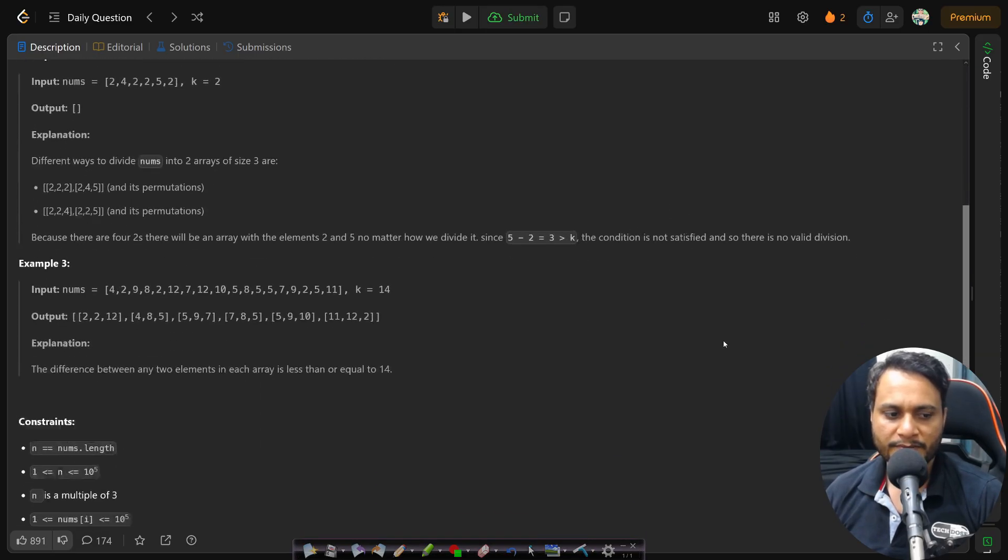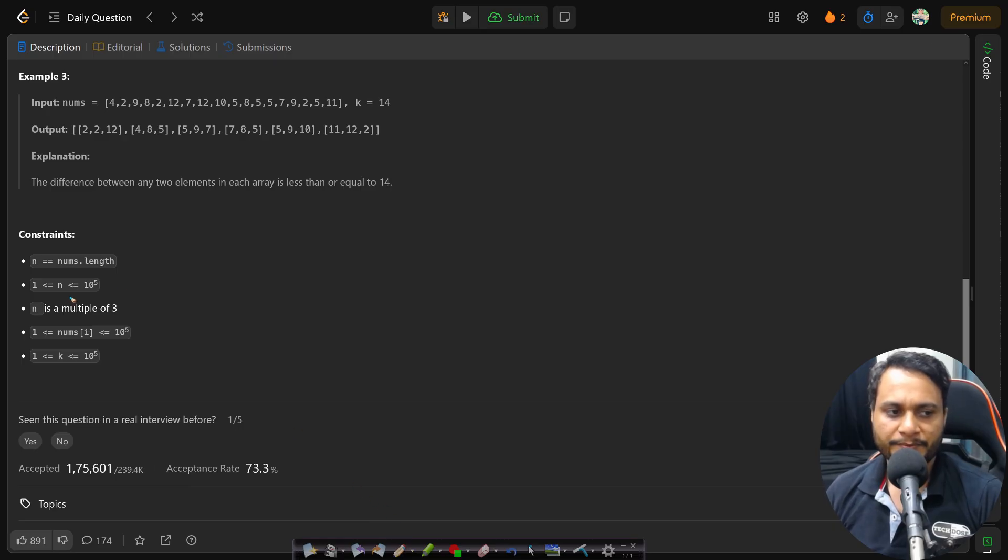So the problem statement is very straightforward. If you look at the constraint, then n value is 10 to the power of 5, that means you cannot write two loops to solve this problem. You cannot make it n square, otherwise it will become 10 to the power 10 computations, which is more than 10 to the power of 8, which is a standard for one second. So looking at the constraint itself, you can make out that you are required to write an algorithm no more than n log n. An n log n or an order of n algorithm would work best for us.